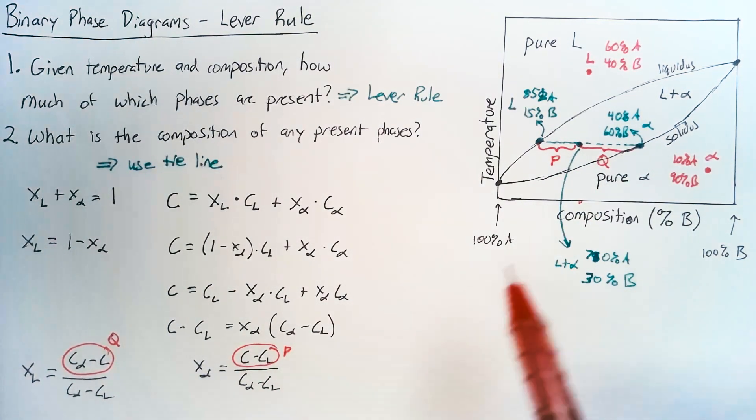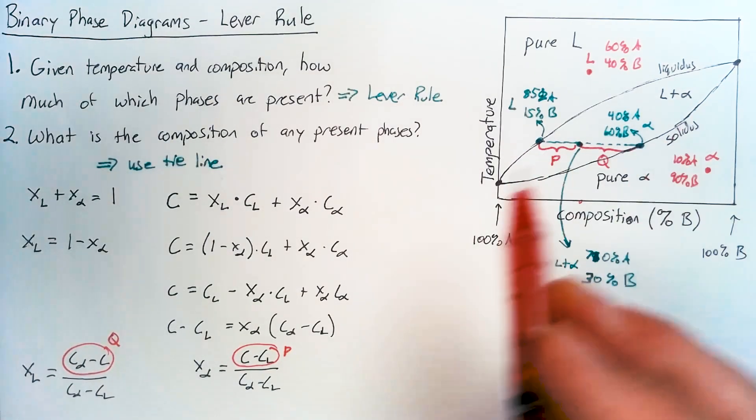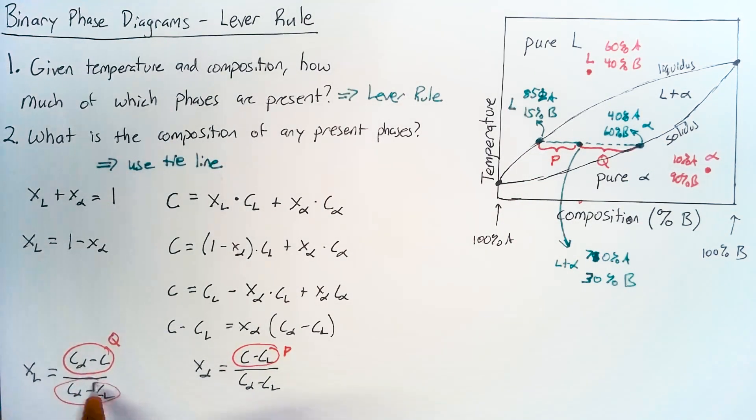And if we look at the denominator, that's the total distance across this entire line. So for both of these, this is P plus Q.